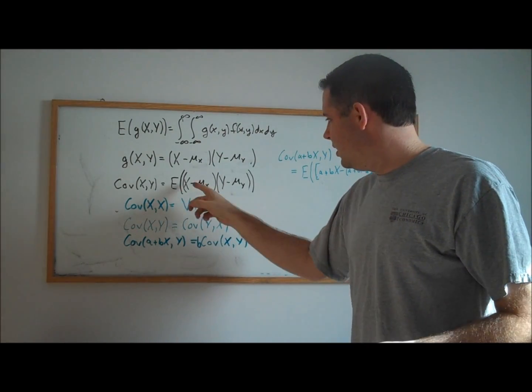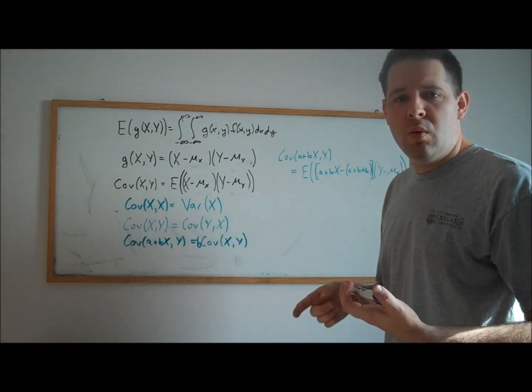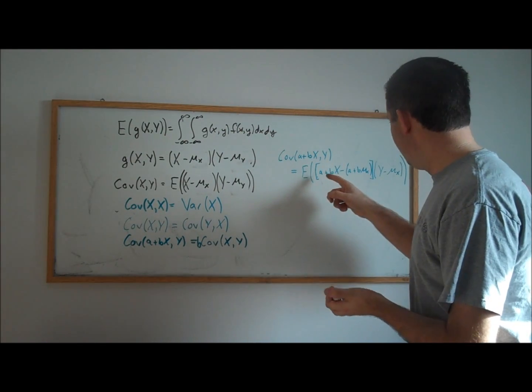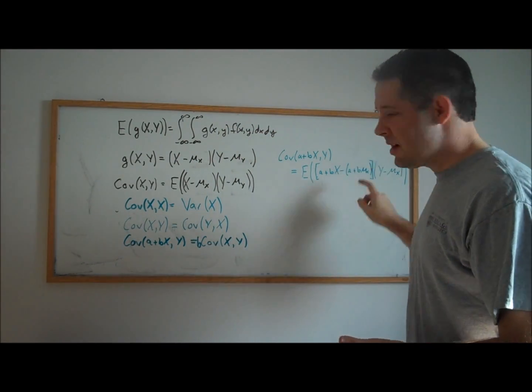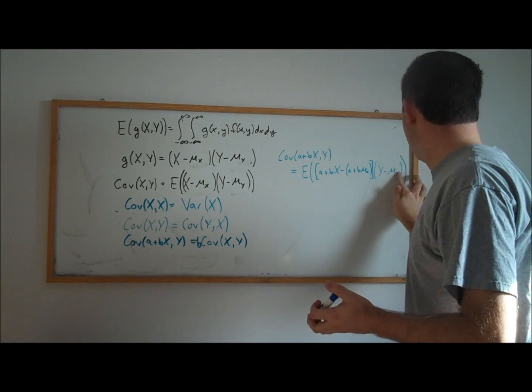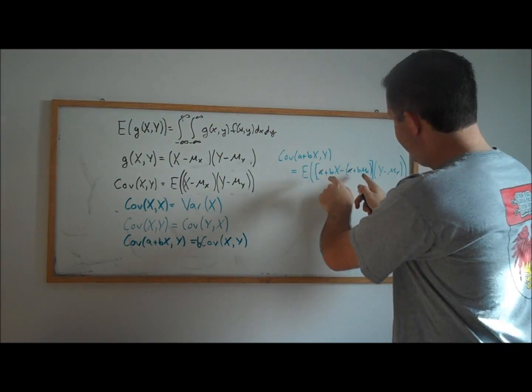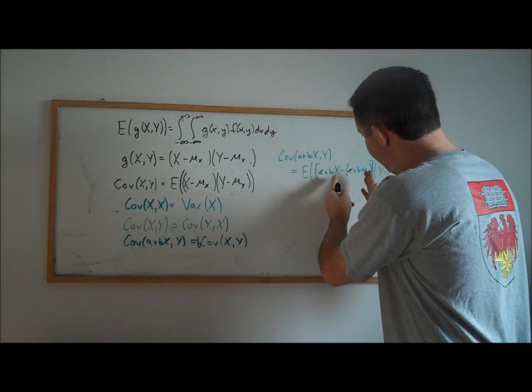We can plug into our covariance. Instead of X, we have a + bX. Instead of mu_X, we have a + b*mu_X. We get this expression in the first part of the covariance, and the second part remains the same. Examining inside this expectation, we can cancel the a's. The remaining terms all have a b.